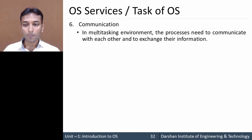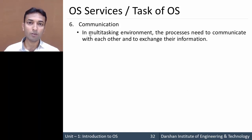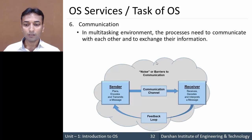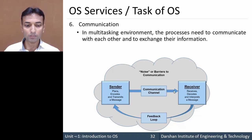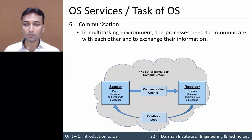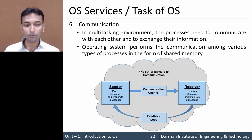Next is communication. In a multiprogramming environment, more than one program runs at the same time, and processes need to communicate with each other and exchange information or data. For example, one process sends data or information to another process through communication channels. This functionality is provided by the operating system, which supports communication among various processes in the form of shared memory.